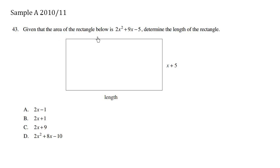Given that the area of the rectangle below is 2x squared plus 9x minus 5, determine the length of the rectangle. So we have the area, and we have one side. So we can solve the length by simply dividing.